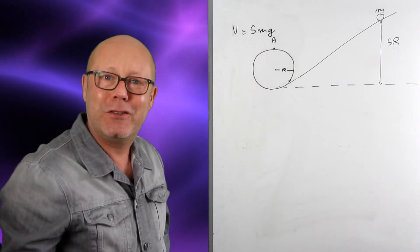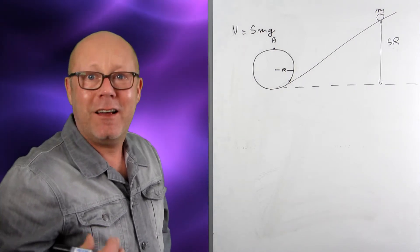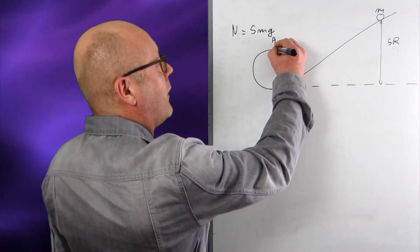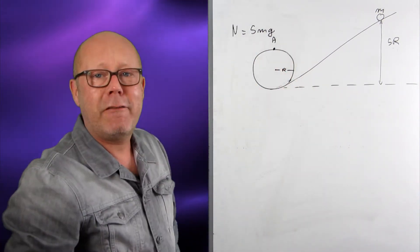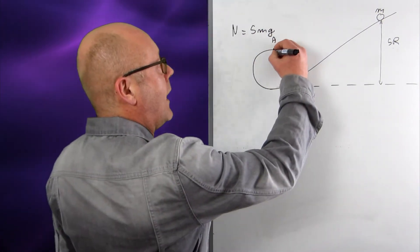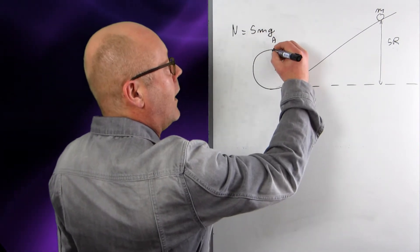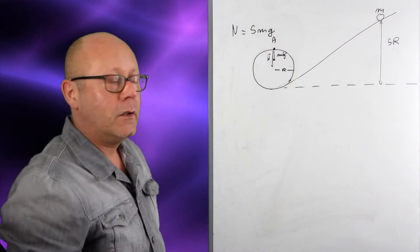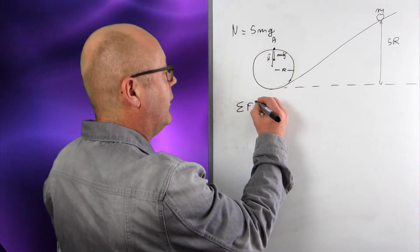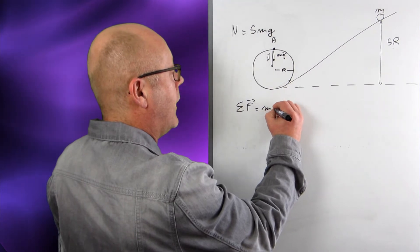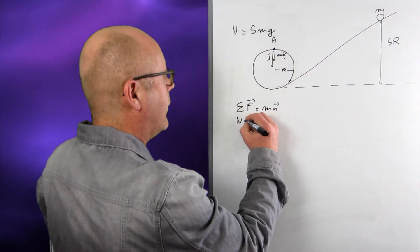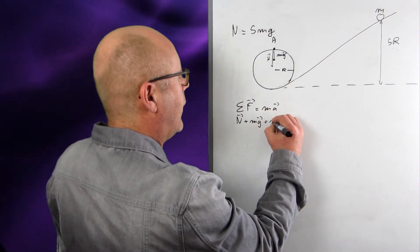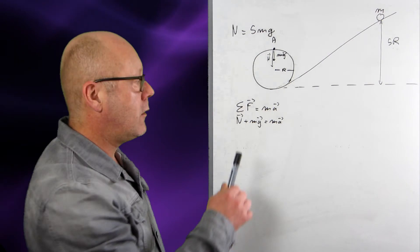I want to find the normal force, therefore I want to find a force, so I'm going to apply Newton's laws. Before that, I'm going to look at what forces I have at point A. I have gravity, mg, and I have the normal force. So now I can apply Newton's second law: the sum of the forces equals ma, that is N plus mg equals ma.